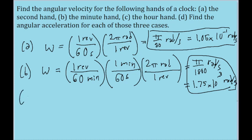And finally for the hour hand. Remember, there are 24 hours in a day, but only 12 numbers on the clock. So the hour hand makes 1 revolution every 12 hours.